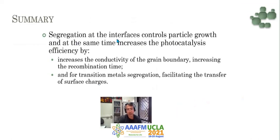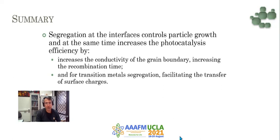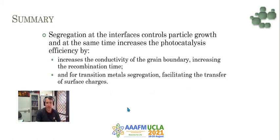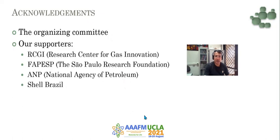In summary, segregation at the interface controls particle growth for nanoparticles and simultaneously increases photocatalysis efficiency by increasing the conductivity of grain boundaries, increasing the recombination time, and for segregation of transition metals, facilitating the transfer of surface charge for the reaction. I want to thank the organizing committee for inviting me, and all our sponsors: RCGI, FAPESP, ANP, and Shell Brazil. Thank you.